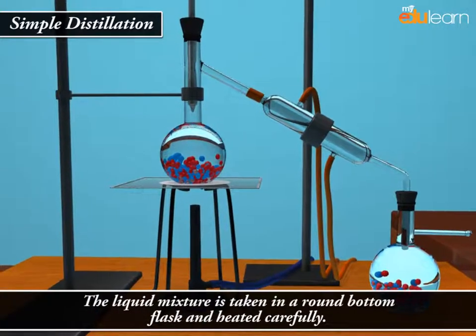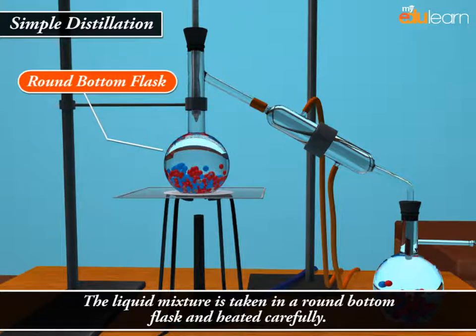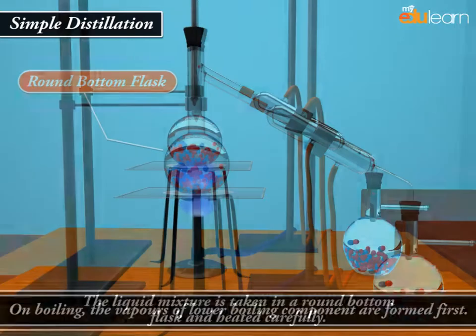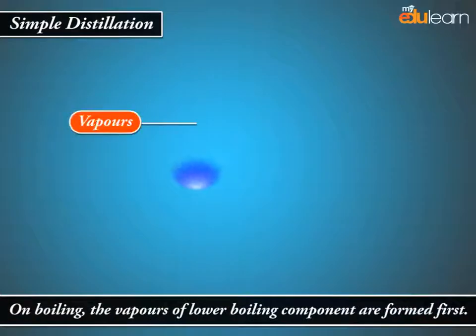The liquid mixture is taken in a round bottom flask and heated carefully. On boiling, the vapors of lower boiling component are formed first.